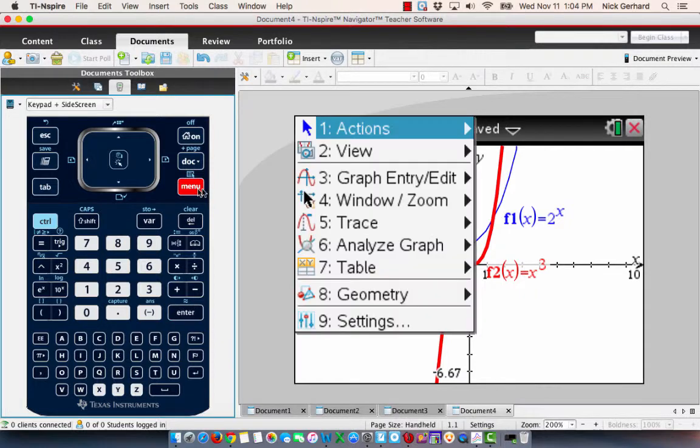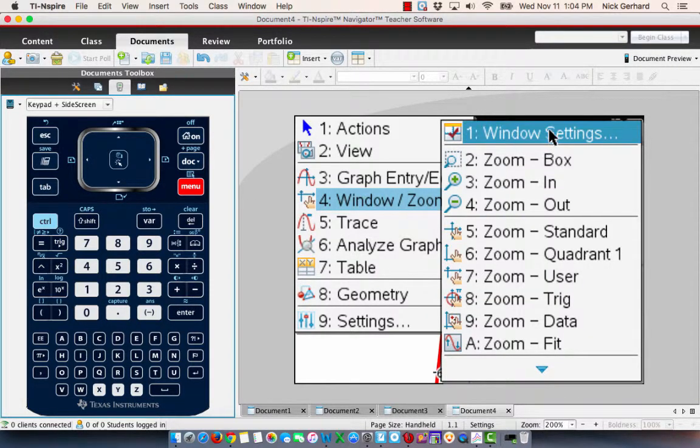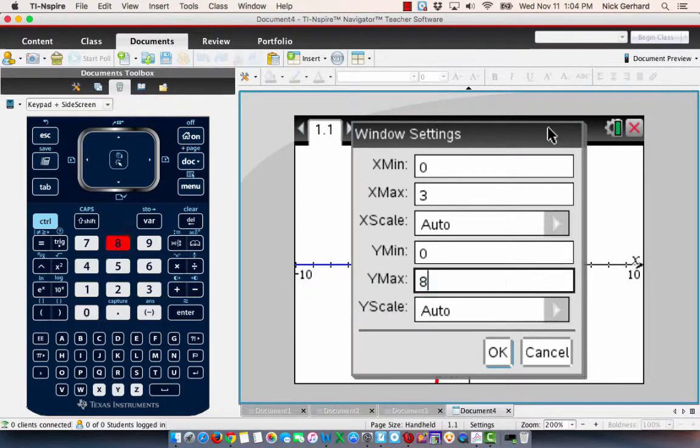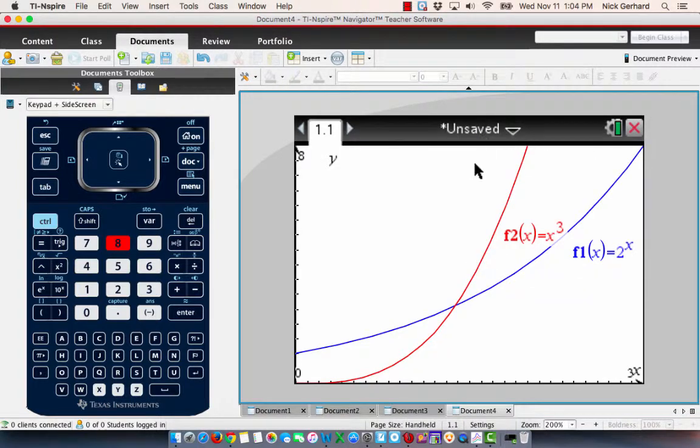And so, the first thing I'm going to do is I'm going to go into the window, and I'm going to change the window so that it's only working with positive x values. And I'm actually going to shrink in the x coordinates, and I'm going to look at it from 0 to 3 and 0 to 8, kind of similar to what we did in class.